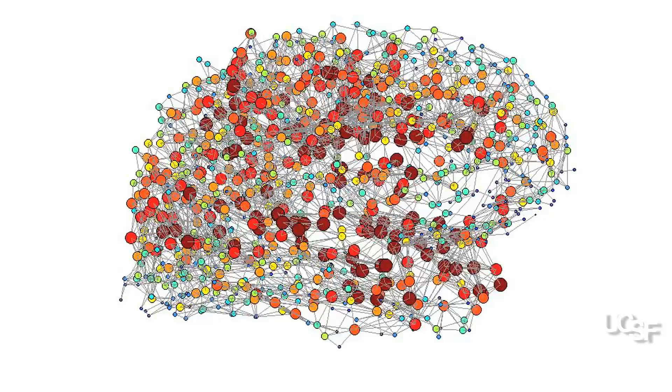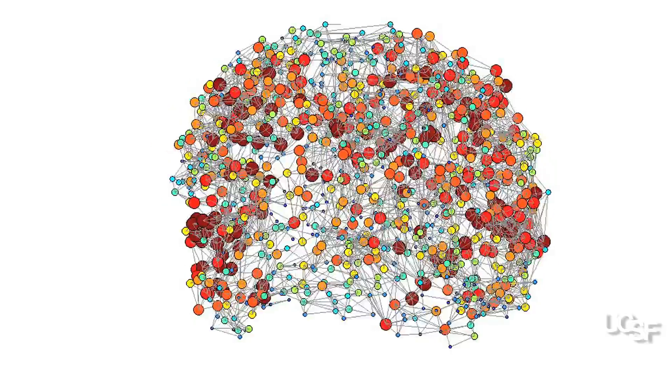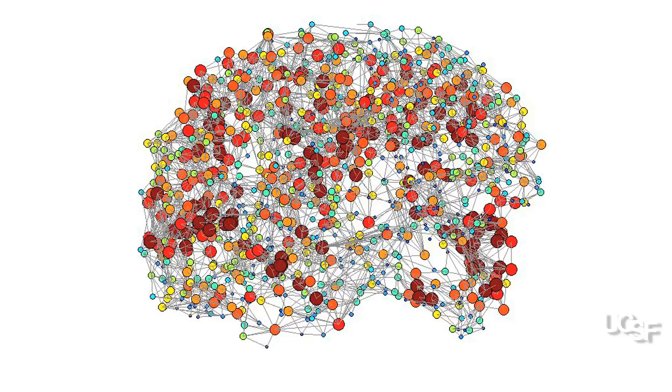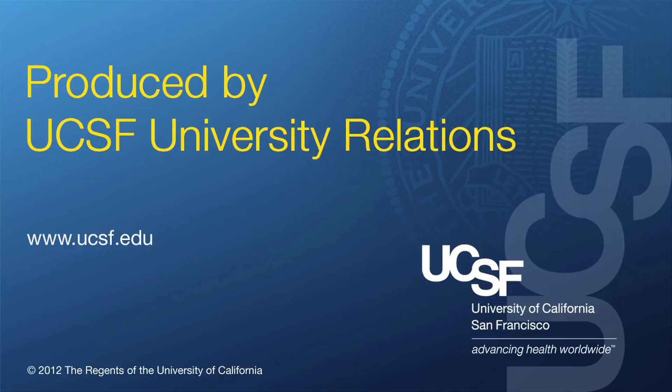This is the first time that the connectome of a human brain malformation has been mapped, and it has revealed some of the unique anatomical features behind this genetic cause of autism.